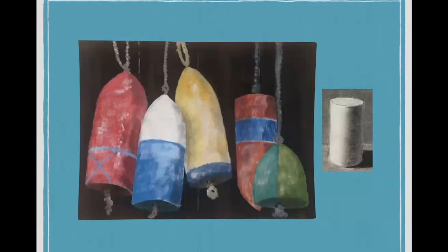These buoys are mostly cylinders. On a cylinder with light coming from the left, you'd see noticeable light on the left, shadow in the middle, and a little bit of reflected light on the right-hand side. We can see a little bit of that in this painting; it just needs to be enhanced a little more to give a very 3D look.